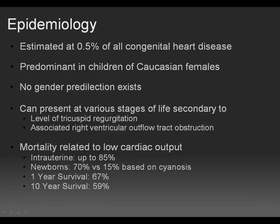Epstein's is estimated to occur in only one-half percent of all congenital heart disease cases. For unknown reasons, it's predominantly seen in children of Caucasian females, with no male or female sex bias. The disease can present at various stages of life, dependent upon the severity of tricuspid regurgitation. Patients can have a relatively high mortality rate, particularly in the intrauterine period, with up to 85% of fetuses perishing in utero.